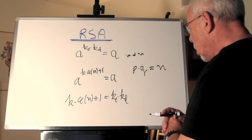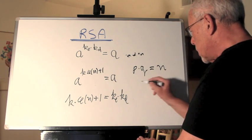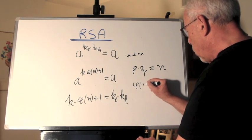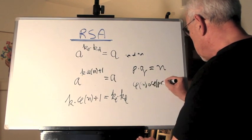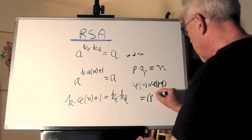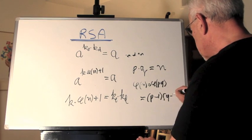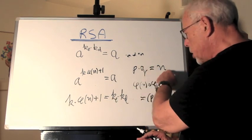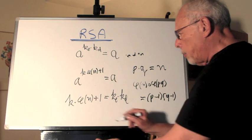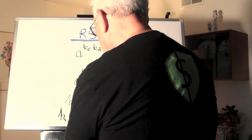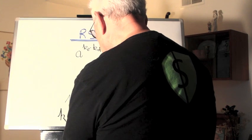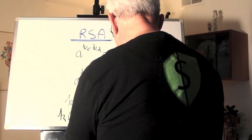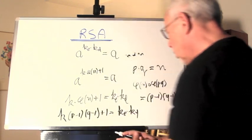Now, Euler showed to us that his function phi N or phi of P times Q equals P minus 1 times Q minus 1. So, if we set N this way, what do we have? We have the number K times P minus 1 times Q minus 1 plus 1 equals KE KD. That is what we have.